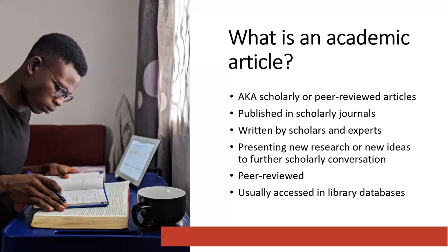Quick refresher on what an academic article is. You might also hear them referred to as scholarly articles or peer reviewed articles. Academic articles, which are published in scholarly journals, are a forum for research and knowledge production where authors who are experts in their fields present new research or new ideas to further scholarly conversation. That scholarly conversation consists of scholars and experts continually building on the work of others, adding new data, perspectives, and analysis, because research is an ongoing process.